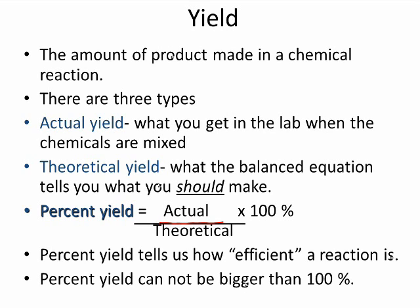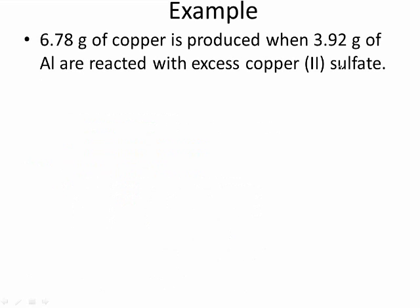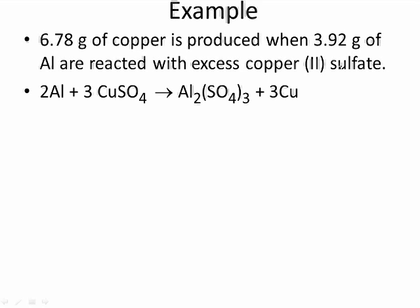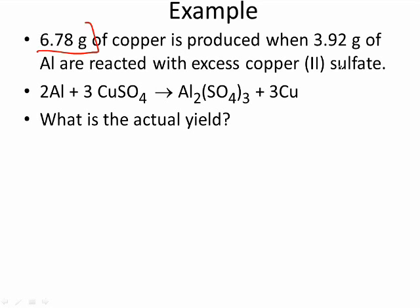Percent yield cannot be bigger than 100%. Let's look at an example. There are 6.78 grams of copper produced when 3.92 grams of aluminum are reacted with excess copper-2 sulfate. What is the actual yield? Well, the actual yield is what was made — 6.78 grams of copper.